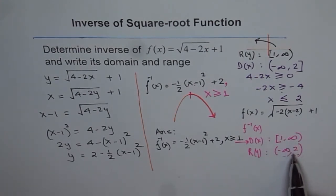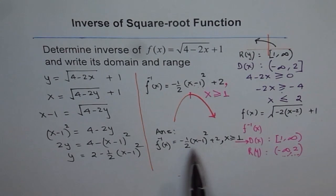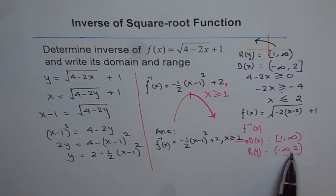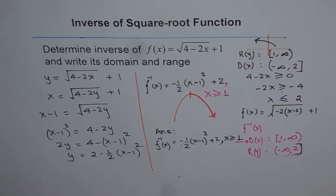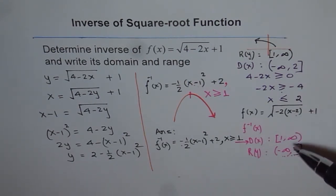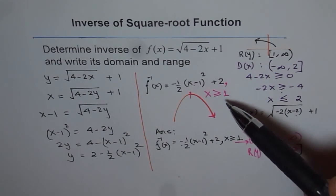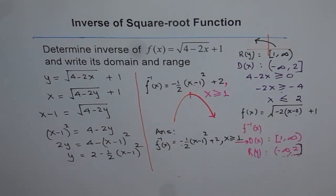The range and domain match. The range is less than or equal to 2. That is how the inverse function works. That is how we should find the inverse of a square root function. It was a good process to find the domain and range of your inverse function right at the beginning, so that we can catch our own mistakes. I hope you appreciate it.